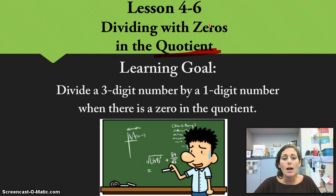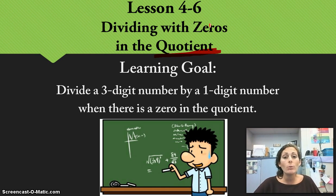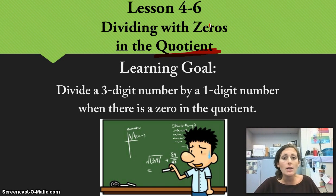Your learning goal for this topic is to divide a three-digit number by a one-digit number when there is a zero in the quotient. When we get to the vocabulary words, we're going to talk about what dividend and divisor mean to help you.